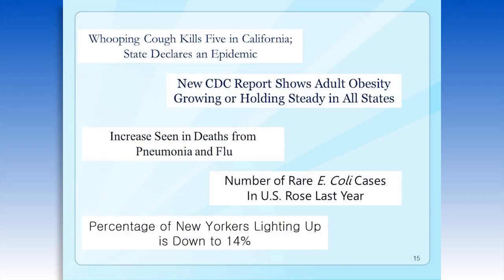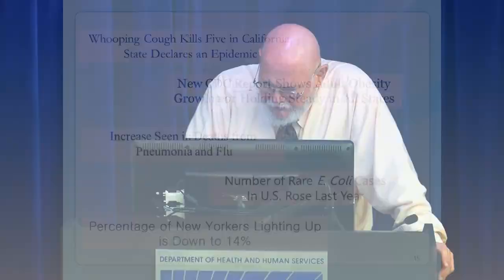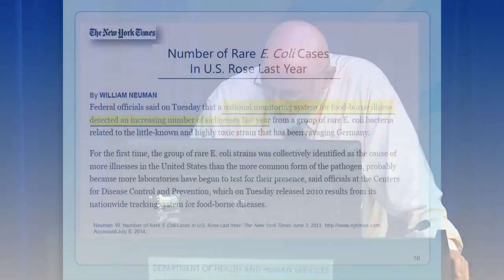Here are a few headlines from the past. Think about the surveillance uses we listed in the previous slide and apply those to these headlines. How do we know that an epidemic is occurring? How do we know that the percentage of New Yorkers smoking is decreasing? Or that obesity rates might be increasing or holding steady? Public health surveillance provides the answers to questions such as these, as well as many others.